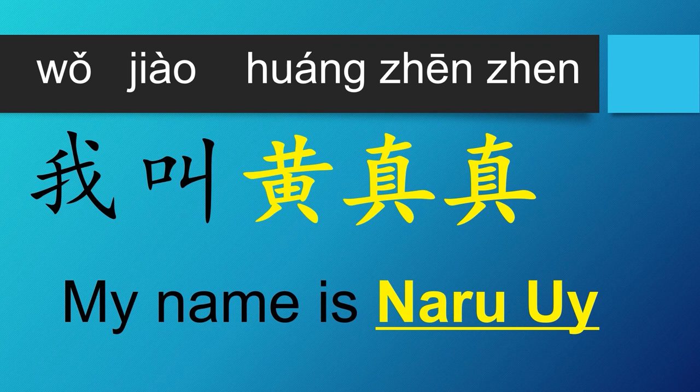To introduce ourselves in Chinese, we say 我叫, followed by your name. In this example, her name is 黄珍珍. 我叫黄珍珍. My name is 黄珍珍. How about you? 你叫什么名字? What is your name?